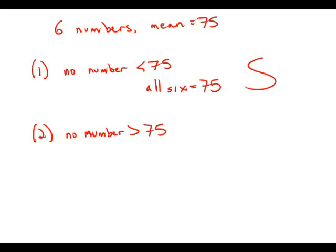Anytime you have numbers above the mean, you must also have numbers below the mean and vice versa. And if you know that you have no numbers below the mean, that automatically means you cannot have any numbers above the mean.